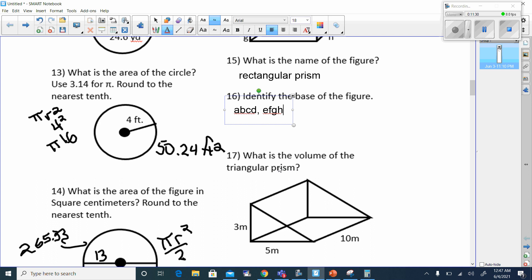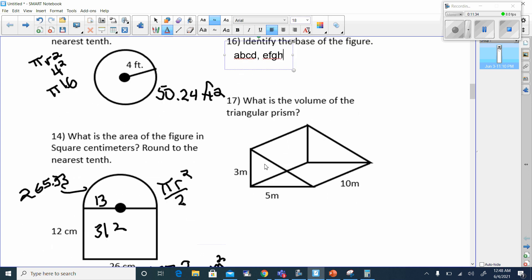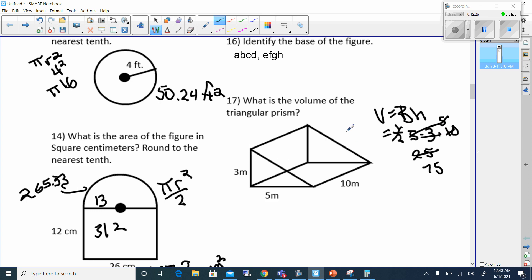Next it says, what is the volume of this triangular prism? The volume. Remember, the volume formula is volume equals the base times the height. The base is going to be the triangle, and triangle is one-half the base times the height. The base of this is 5, and the height of this is 3. And then we have to do the height of this prism, which would be 10. And if I go and do this, one-half of 10 is 5, 5 times 5 is 25, and 25 times 3, that's 75. So that tells me the volume of this is 75 meters cubed.